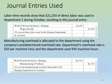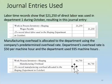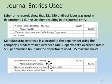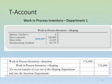Manufacturing overhead is also allocated to the shaping department using the company's predetermined overhead rate. Just as in a job costing system, the company can use a single plant-wide rate, departmental rates, or activity-based costing. In this department the overhead rate is $50 per machine hour, and the department uses 935 machine hours, giving us $46,750. We debit work in process and credit manufacturing overhead, moving it into the WIP for the shaping department.